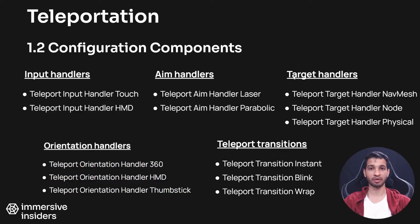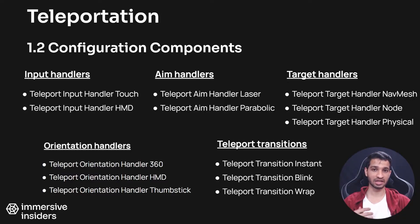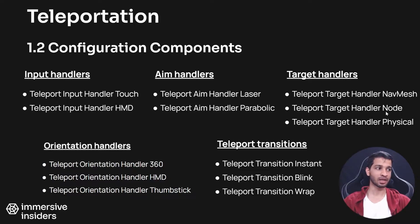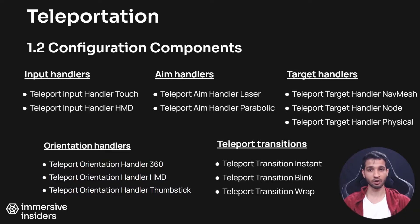The third category is Target Handlers, which determines the type of target selection and whether it is valid. There are three types: Navigation Mesh — you can teleport anywhere within the navmesh; Node — you can teleport only to a specific point; and Physical — you can teleport anywhere within a large defined area.